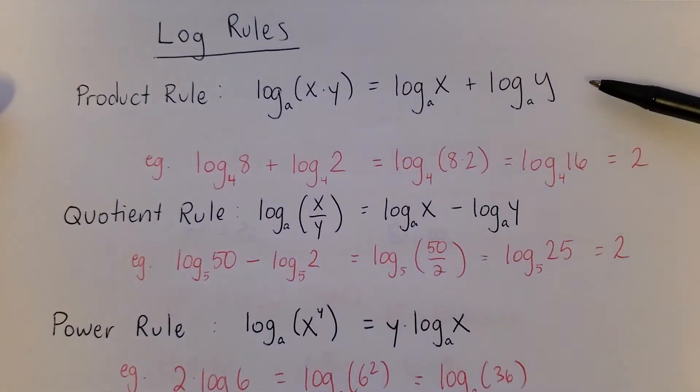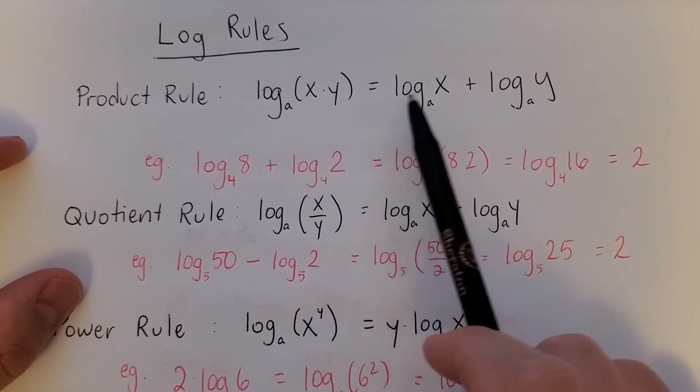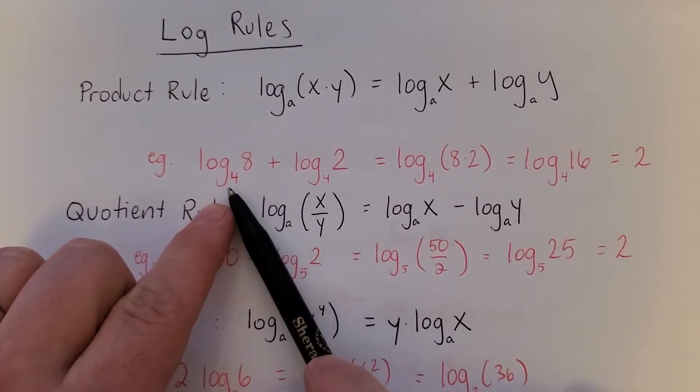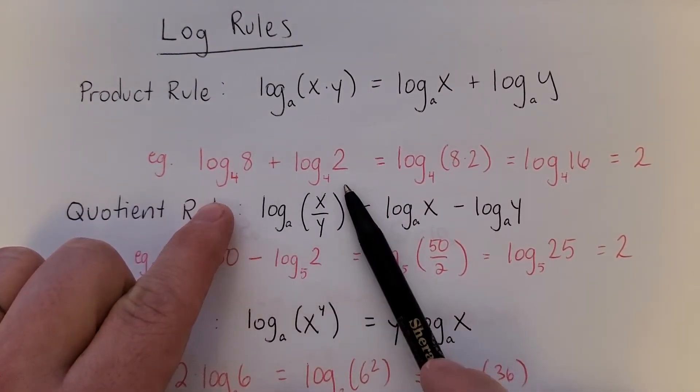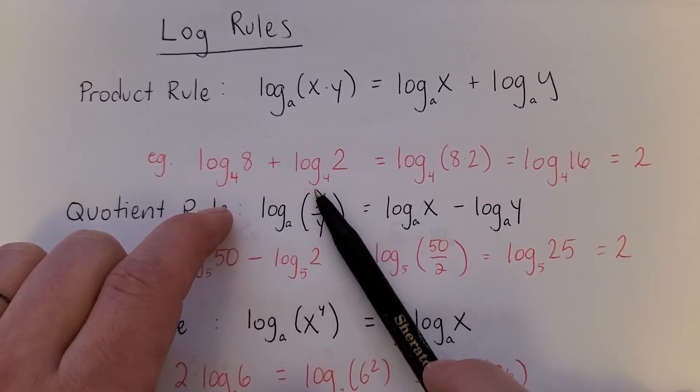Start with the product rule. Basically the log of a product is equal to a sum of those logs. Typically you use it in the other direction though. So I've got these two logs being added together. They have the same base which is important. This isn't something you could calculate directly.